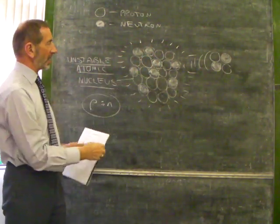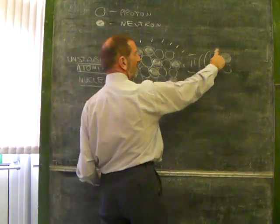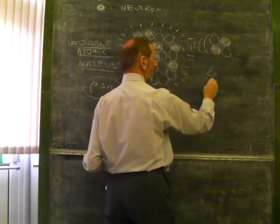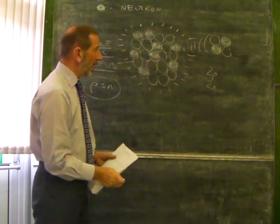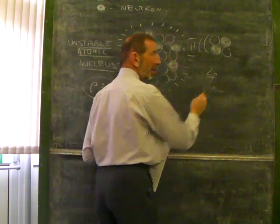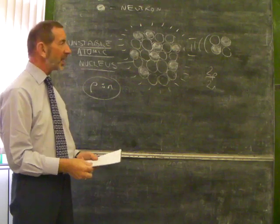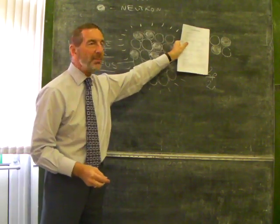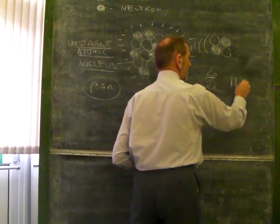We can tell what the fragment is like. We can see from our diagram, this little fragment has two protons, two neutrons. Because it has two protons, this is effectively like a little piece of helium. It's what the nucleus of a helium atom would look like. So we give it a symbol, He.